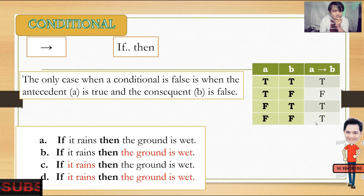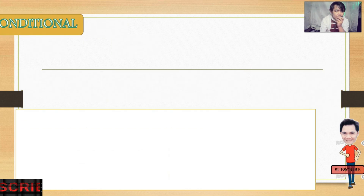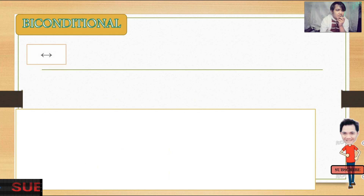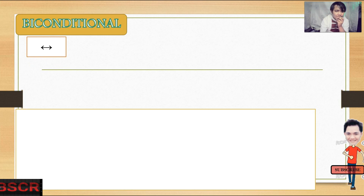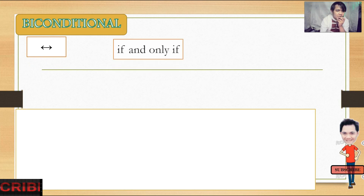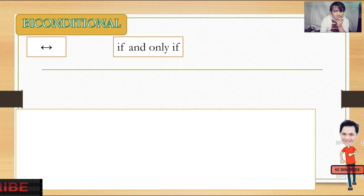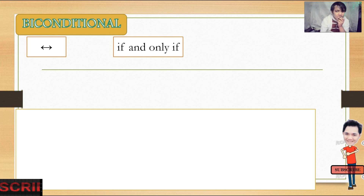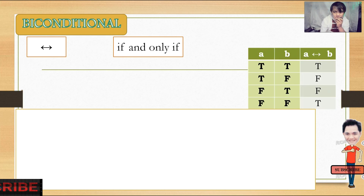That is for the conditional. Let's proceed to the last one: the biconditional. The symbol for biconditional uses two arrowheads, right and left. The words we use are 'if and only if' — often written as 'iff.' Let's go to its truth table: A if and only if B.